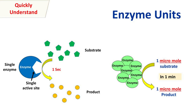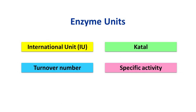Hey guys, Quickback Chemistry Basics here. Let's talk about different units of enzyme. The different units of enzyme are international unit, katal, turnover number, and specific activity.